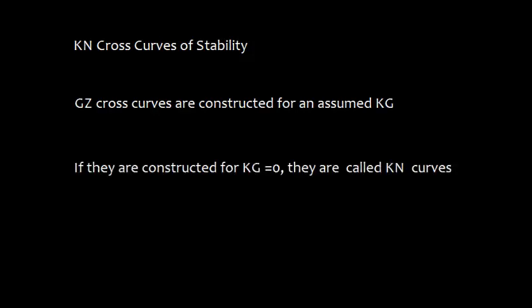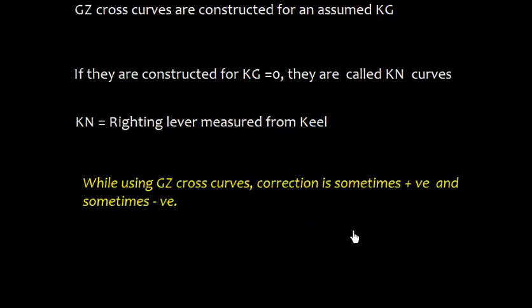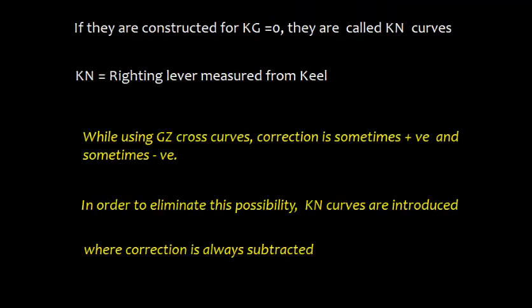Now let us talk about KN cross curves of stability. GZ cross curves are constructed for an assumed KG, and the actual KG can be higher or lower. If these curves are constructed assuming KG equals 0, they are called KN curves. KN is the righting lever measured from the keel. When using GZ cross curves, the correction is sometimes positive and sometimes negative. To eliminate this possibility, KN curves are introduced, and in KN cross curves the correction is always subtracted.